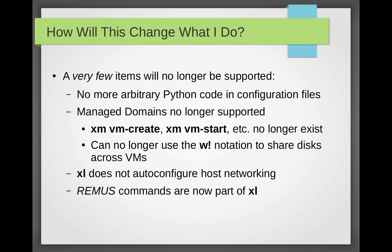Another change is that the 'w!' notation to share disks across VMs is no longer supported — you can look inside the wiki to find out the appropriate syntax to use. Also, XL does not auto-configure the host networking. XM used to do it, but there have been fragile instances where XM doesn't always do the right thing. So with XL, you set up your own networking — there's a wiki page on it, it's relatively straightforward — and that way the toolkit doesn't have to be responsible, and it can't drag you down.